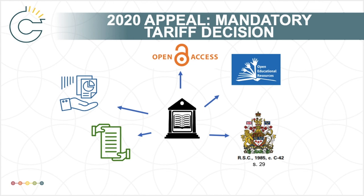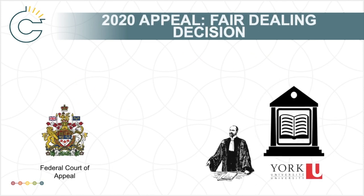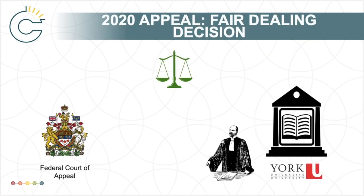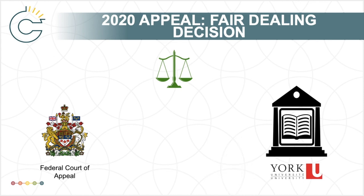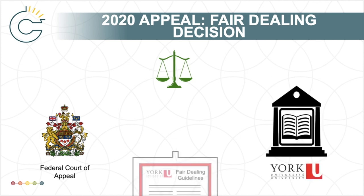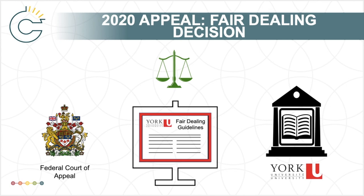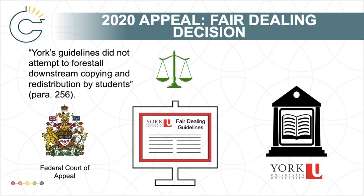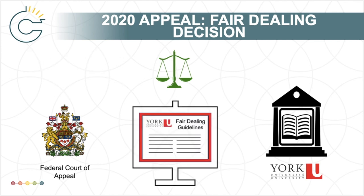In terms of the fair dealing aspect, the Federal Court of Appeal found that York did not show that the federal court erred in law in its understanding of the relevant factors. Thus, York's claim that the first decision had misinterpreted fair dealing was dismissed. The court pointed out that as the copier, it was incumbent on York to ensure its guidelines were implemented according to their stated intention, but the federal court had found that safeguards were virtually absent, undermining York's claim to fair dealing and tending to show unfairness. The court also noted that York's guidelines did not attempt to forestall downstream copying and redistribution by students. These statements will likely shape how educational institutions develop and communicate their fair dealing policies in the future.